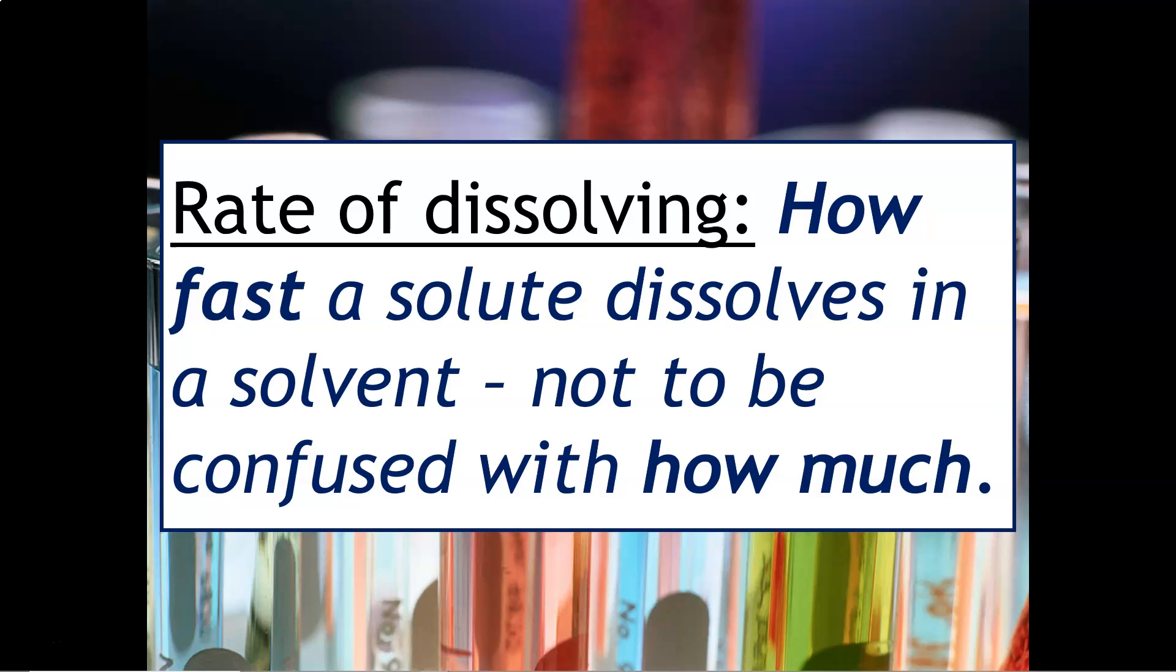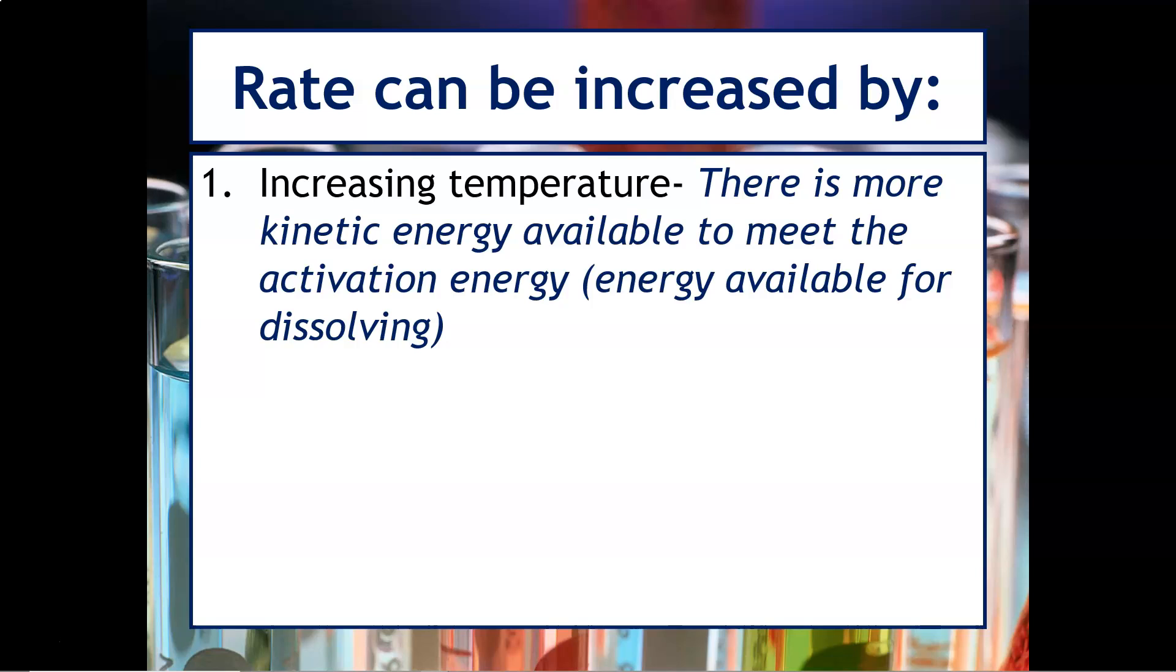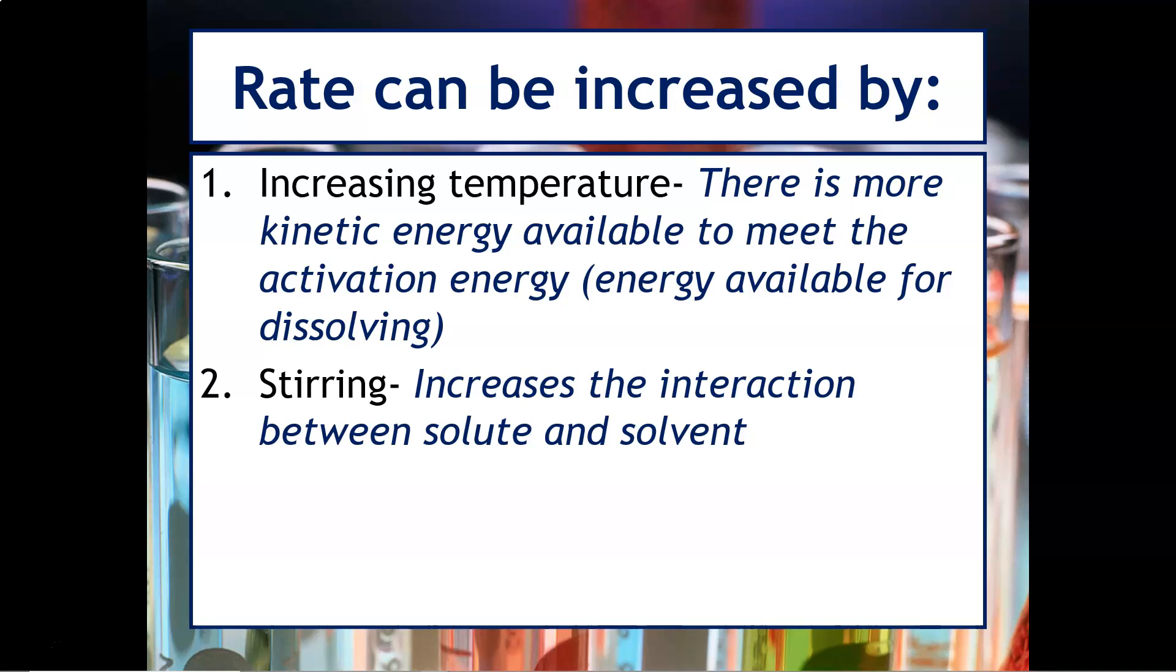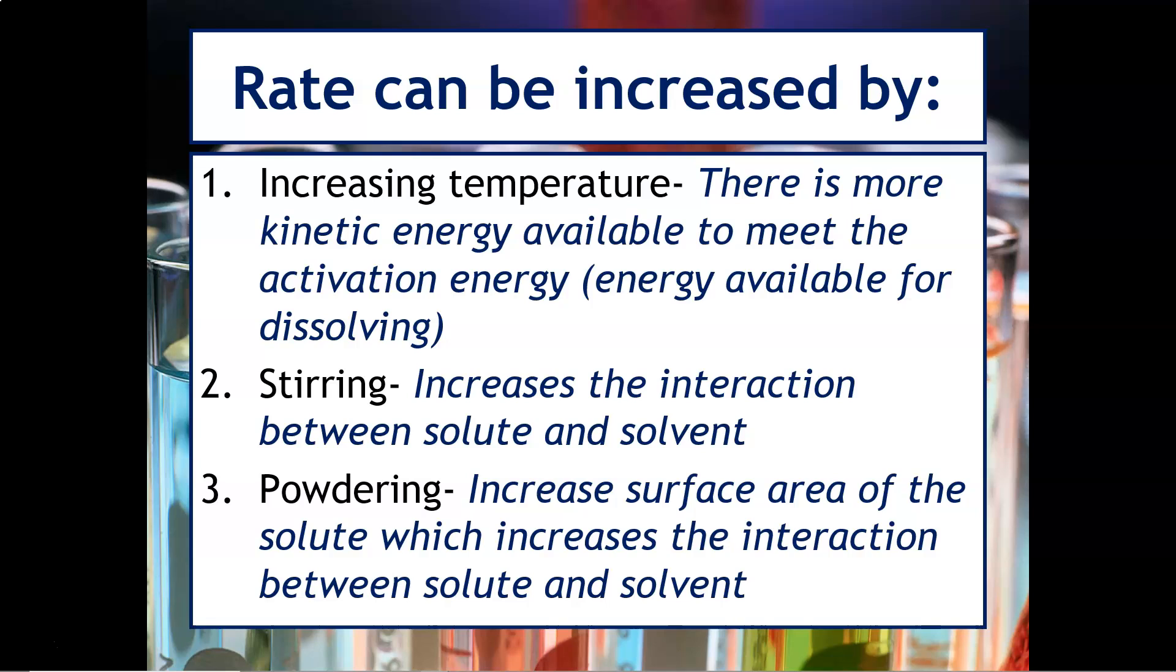So let's talk about the rate of dissolving. The rate of dissolving really refers to how fast a solute dissolves in a solvent, and it's not to be confused with how much. Rate could be increased by increasing the temperature, and the reason why this works is because there's more kinetic energy available to meet the activation energy for dissolving. You could also stir the substance, that increases the interaction between the solute and the solvent, so they're colliding more frequently, causing it to dissolve. And then finally, you could also powder the solute. By powdering, you can increase the surface area of the solute, which increases the interaction between the solute and the solvent and causes it to dissolve more quickly.